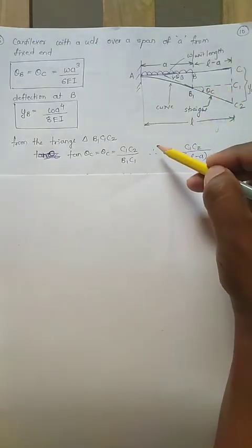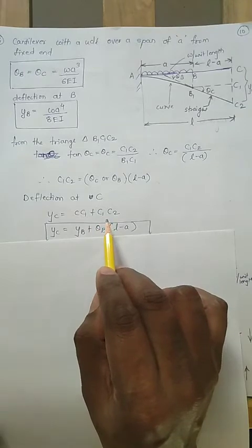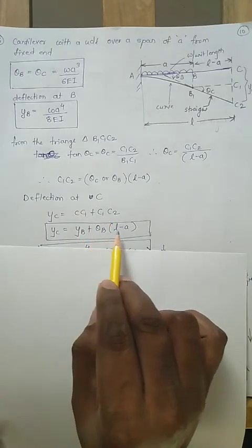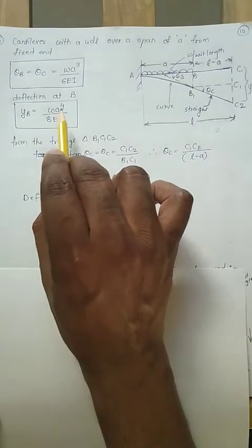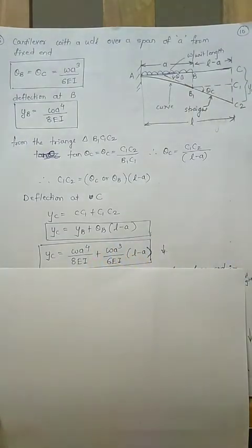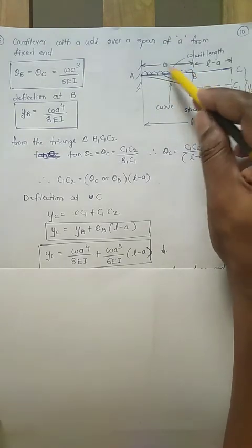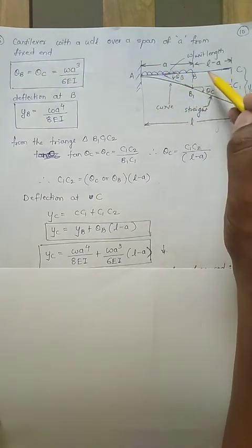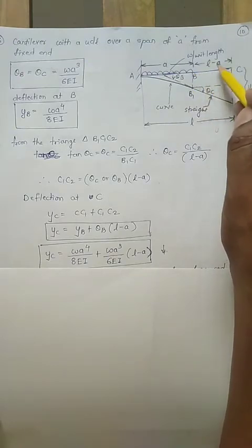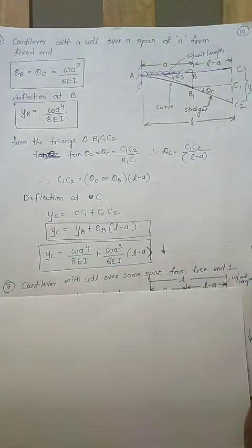Using the same triangle approach, tan(theta) approximately equals theta, and CC1 / (L minus a) gives us the additional deflection. So deflection at C equals y_b plus theta_b·(L minus a), which gives y_c equals W·a⁴ / (8EI) plus W·a³ / (6EI) multiplied by (L minus a). Always remember: when finding deflection at the free end due to a load over part of the span, first find deflection at that loaded part, then add theta of that span times the remaining distance.